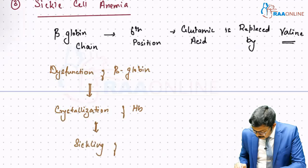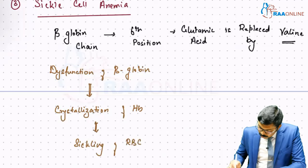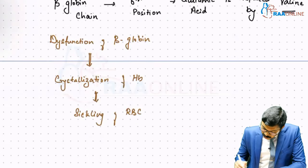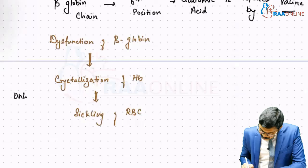And this sickling of RBC will happen only during hypoxia, not in normal conditions. Please remember, sickling takes place only during hypoxia.